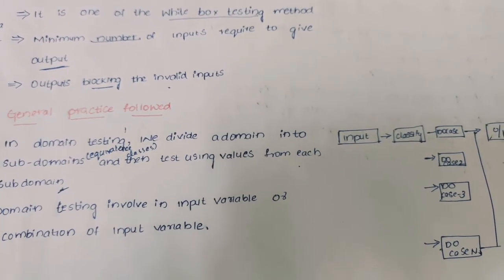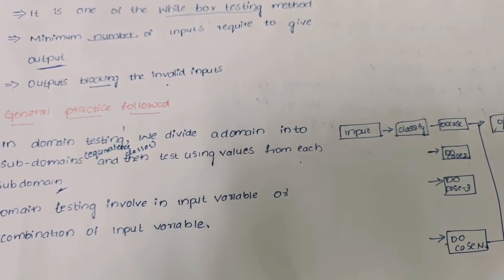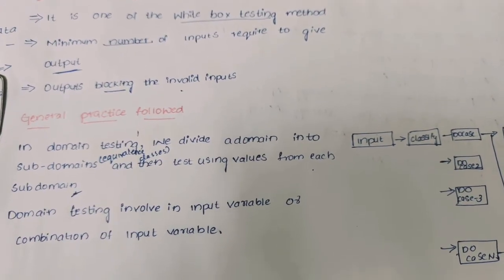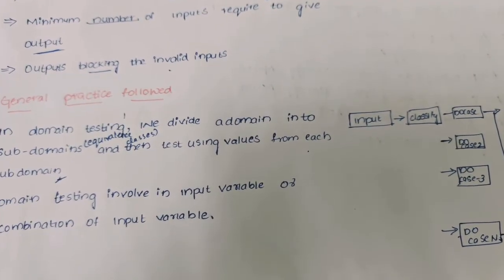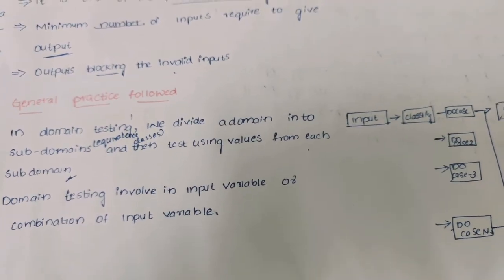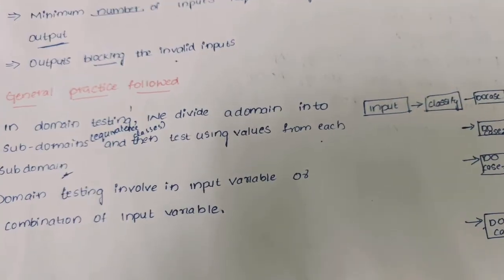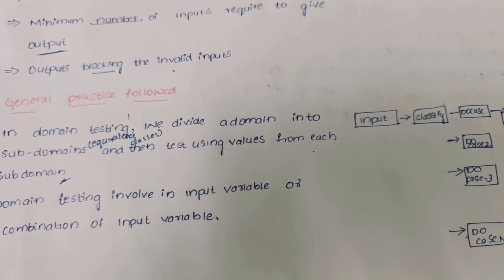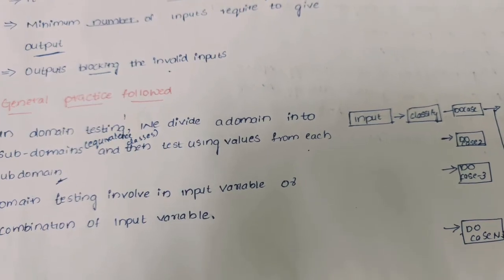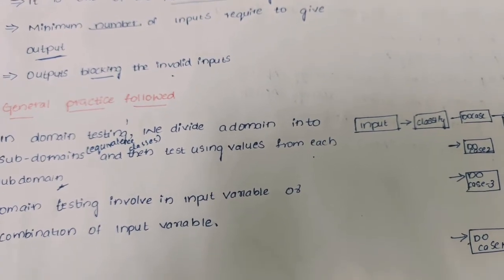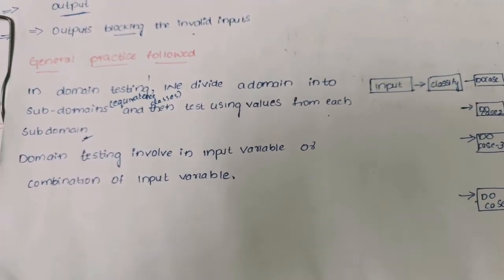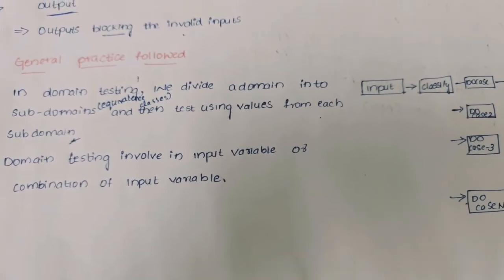For example, if a website or domain has been given for testing, we will be dividing the website into small portions. These small portions are sub-domains or equivalent classes for the ease of testing. By dividing into sub-domains, it is easy to test.